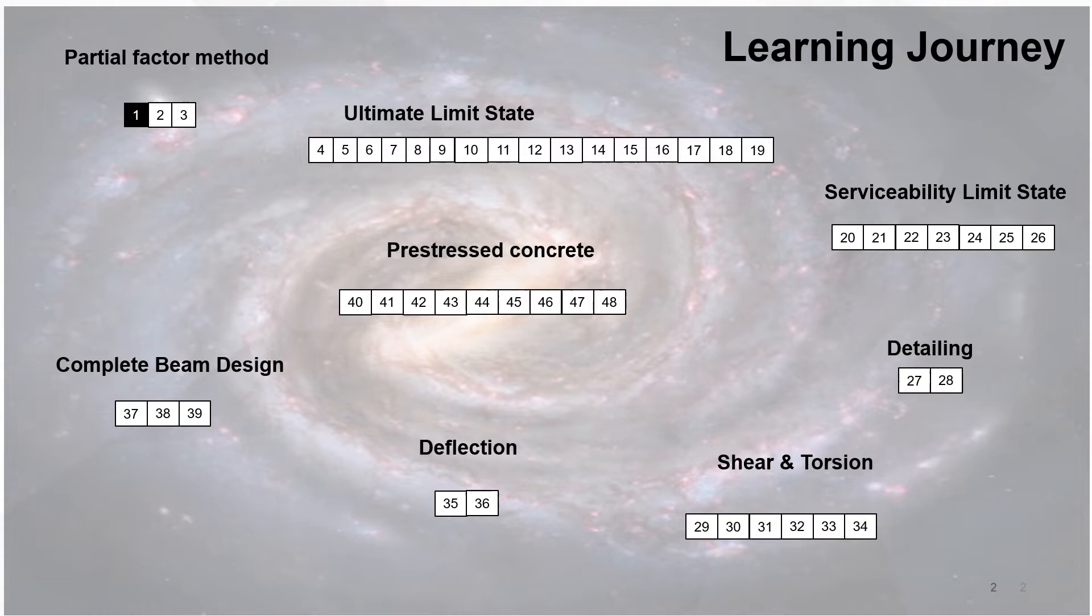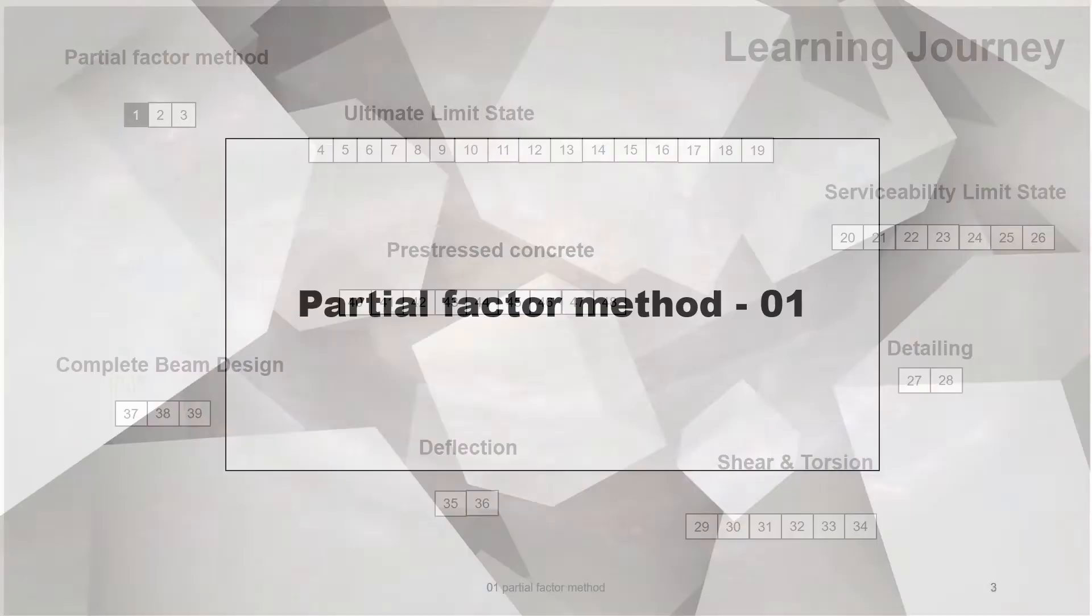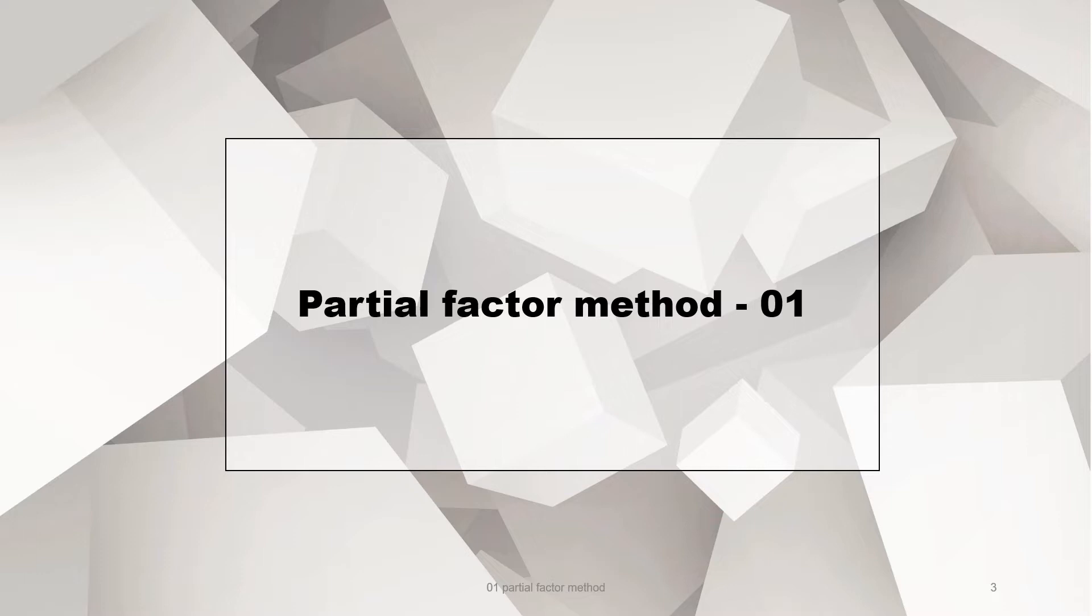This is the first lecture of three regarding the partial factor method. At the end of this video, you will understand that the essential part of the method is that the theoretical probability of exceeding a limit state during the design working life of a concrete structure is accepted.